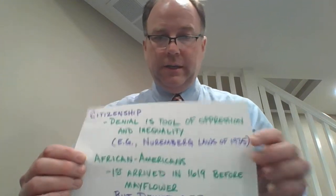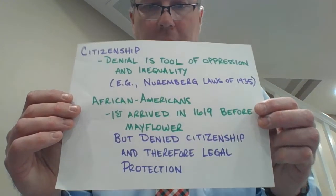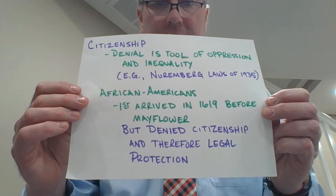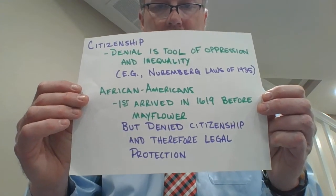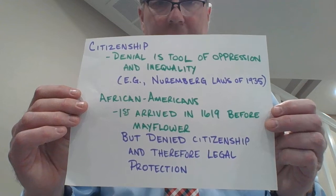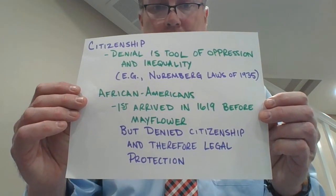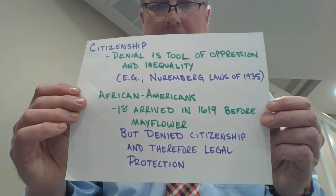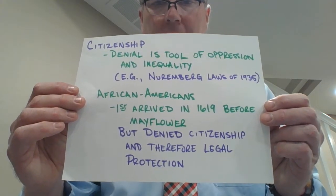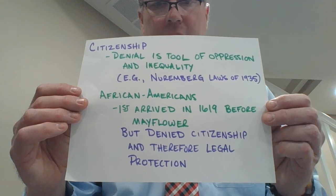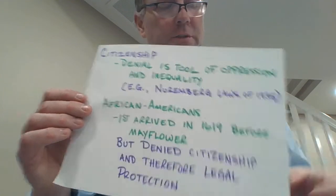In the American example, we go back to African Americans. They first arrived in what would come to be the United States in 1619 — before the Mayflower arrives at Plymouth Rock in 1620. But African Americans were denied citizenship and therefore legal protection. This came to a head in the pre-Civil War case of Dred Scott v. Sanford, which you'll notice in the reading that I've linked.